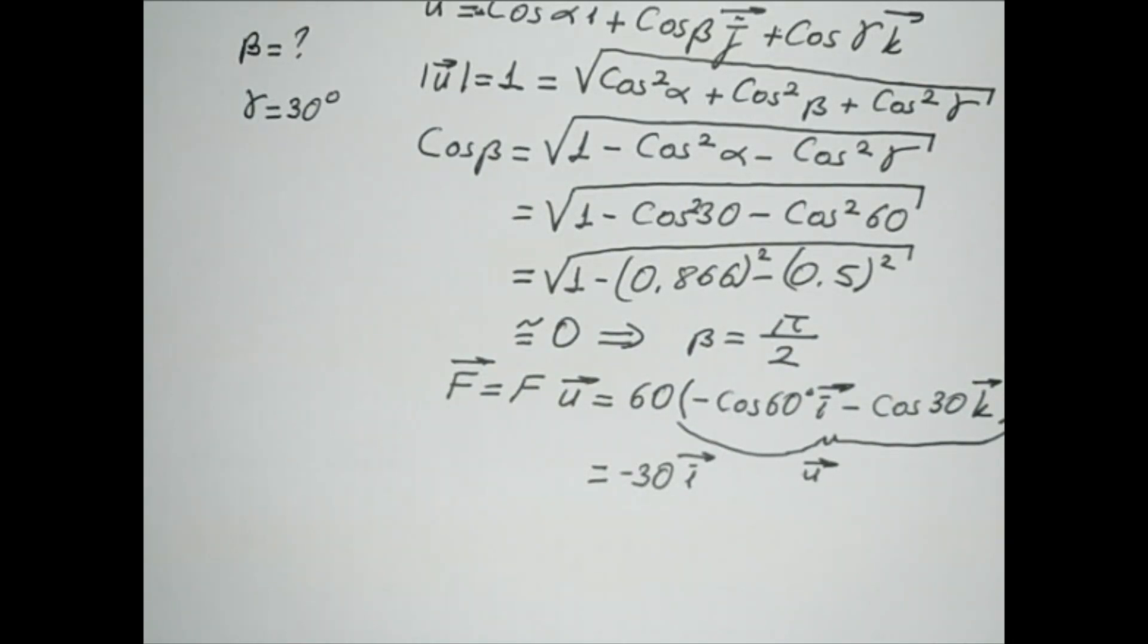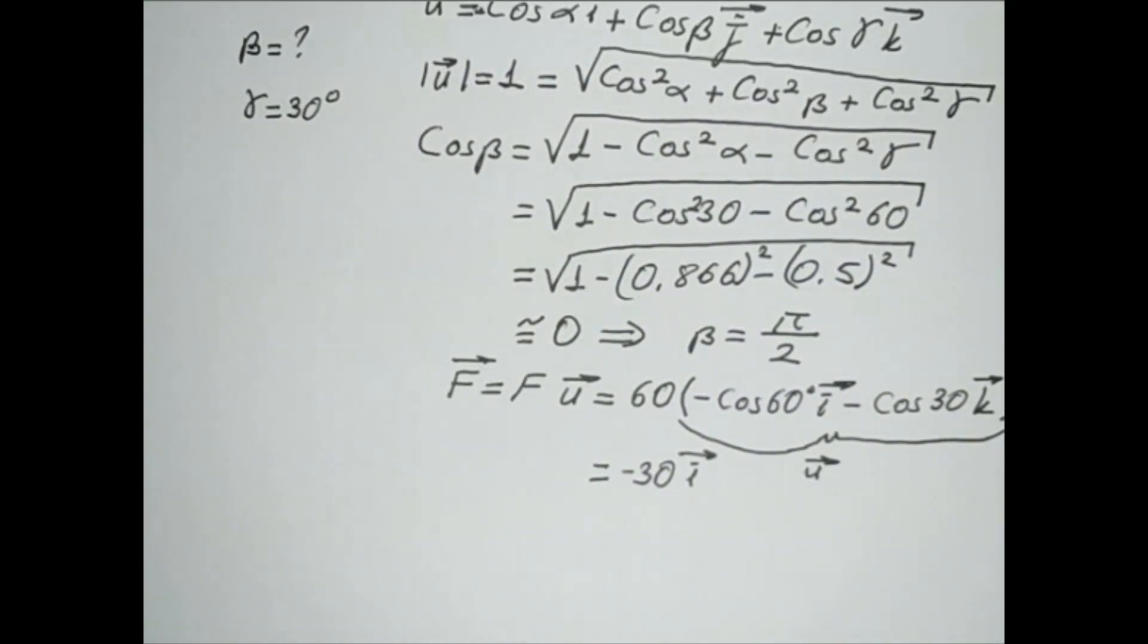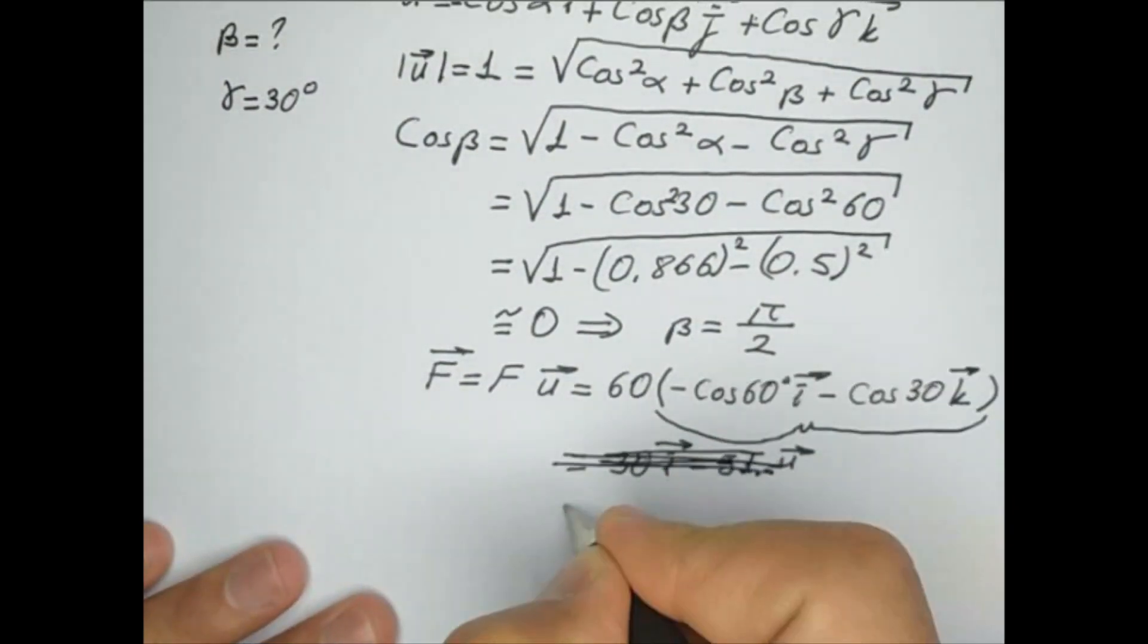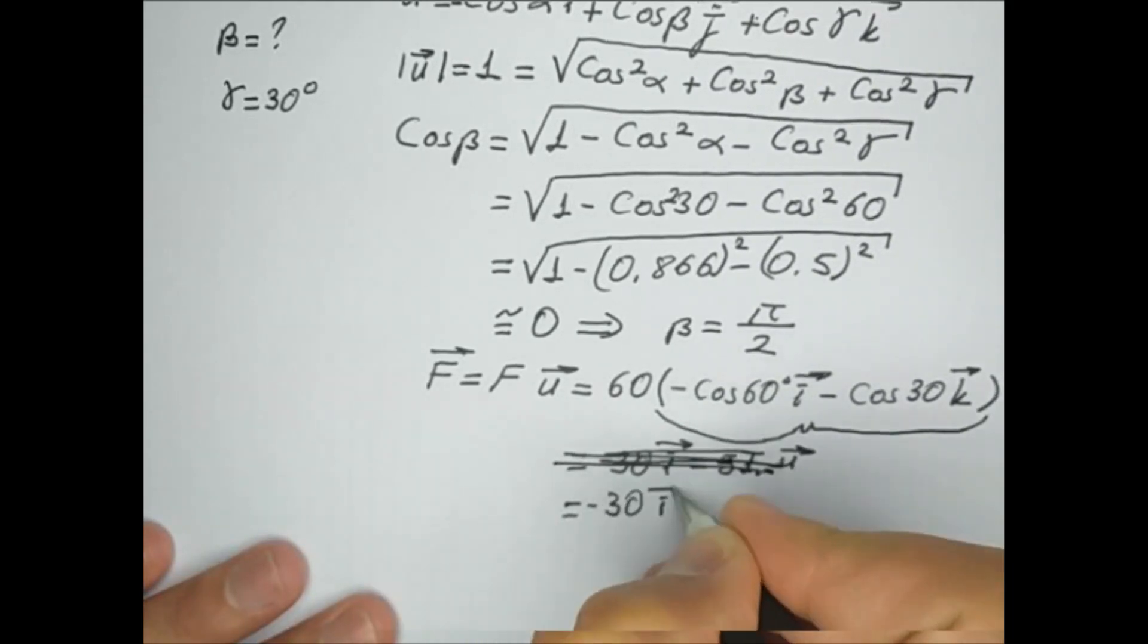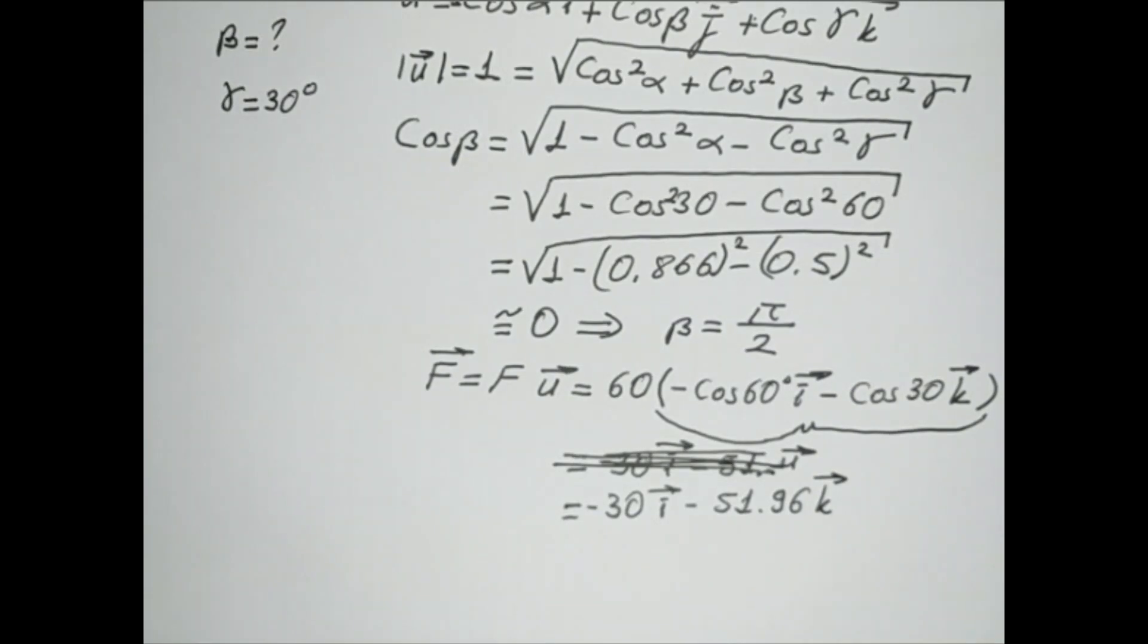51 point, or better write it down minus 30i minus 51.96 k-vector. So this is the force in Cartesian form.